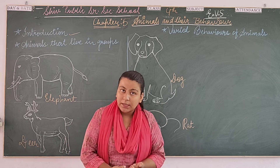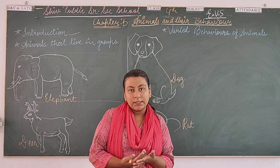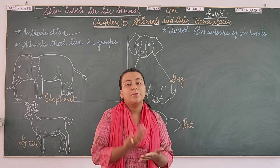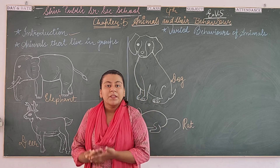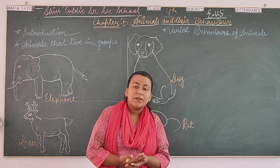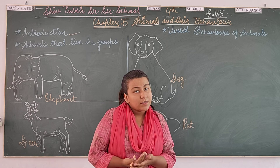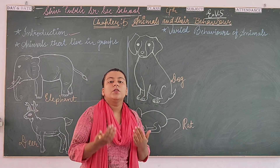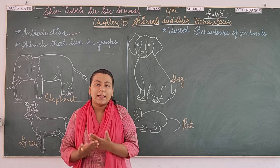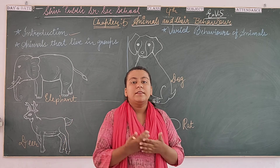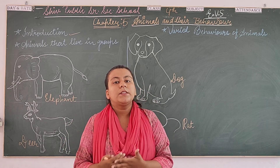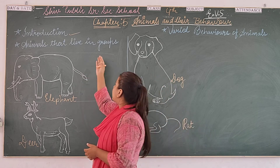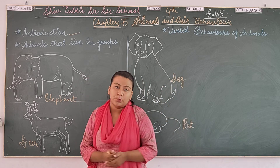Why do they live in a group? They can afford comfort, security, protection, and courage. They can fight with other animals and protect their babies. So animals are called social animals and they are compared with humans.